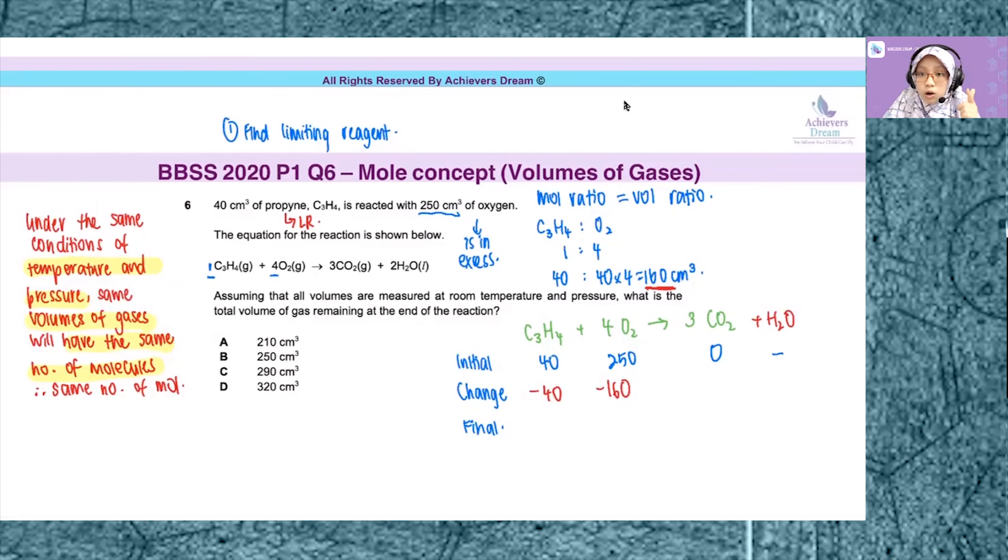What is the volume of carbon dioxide produced? Again, compare it to your limiting reagent. Compare C₃H₄ to CO₂. Based on the balanced chemical equation, the ratio is 1 to 3. Since I have 40 cm³ of propyne, I will produce 40 times 3, which is 120 cm³ of carbon dioxide gas. Plus 120 because it's produced.